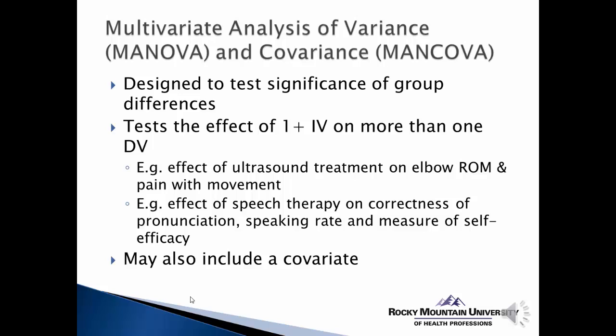Both of those examples demonstrate the ability to study the effect of a treatment on multiple outcomes simultaneously. We can also include one or more covariates, similar to what we would do in ANCOVA, but still look at the effect of the covariate on multiple outcomes. This would be known as MANCOVA, or the multivariate analysis of covariance.